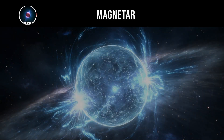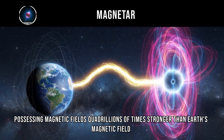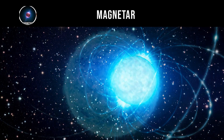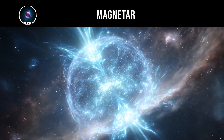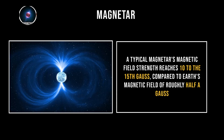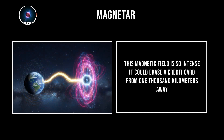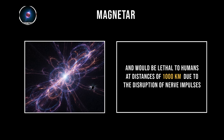Magnetar. Magnetars represent the most magnetically powerful objects in the known universe, possessing magnetic fields quadrillions of times stronger than Earth's magnetic field. These exotic neutron stars form when particularly massive stars collapse, and their magnetic fields become amplified to extraordinary levels during the core collapse process. A typical magnetar's magnetic field strength reaches 10 to the 15th Gauss, compared to Earth's magnetic field of roughly half a Gauss — so intense it could erase a credit card from 1,000 kilometers away and would be lethal to humans at that distance due to the disruption of nerve impulses.